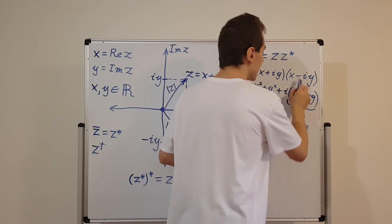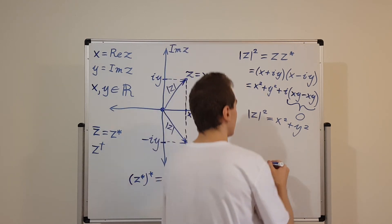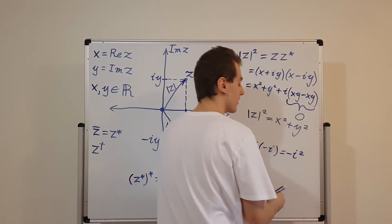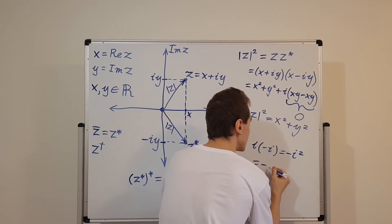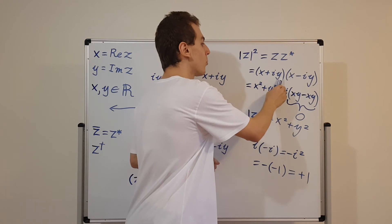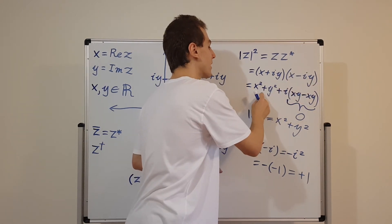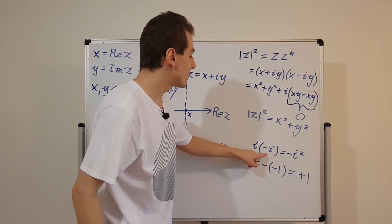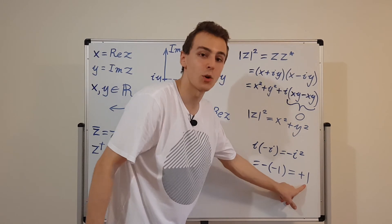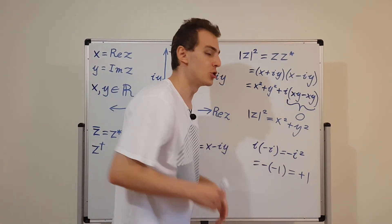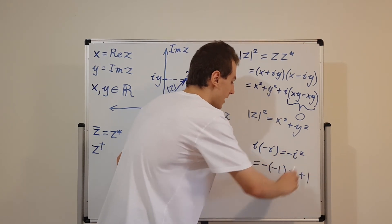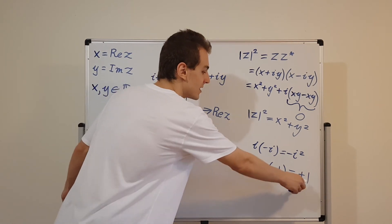One little thing I want to explain: i times minus i is actually equal to minus i squared. We know that i squared is equal to minus one, so we have minus times minus one, which is the same as plus one. So that's how we went from i y times minus i y to plus y squared — because i and minus i are actually multiplicative inverses of each other. i times minus i gives the multiplicative identity, which is one. So i times minus i gives you a minus sign, we factor that out as i squared, and i squared is by definition equal to minus one, so the two minuses cancel to give us plus one.